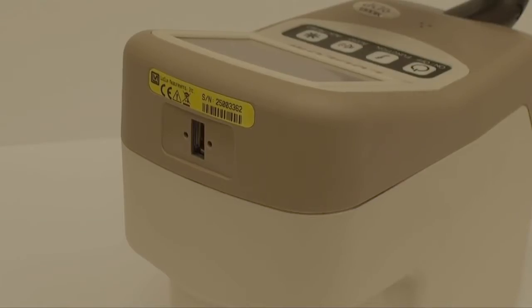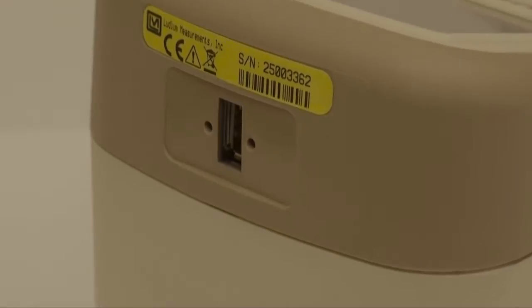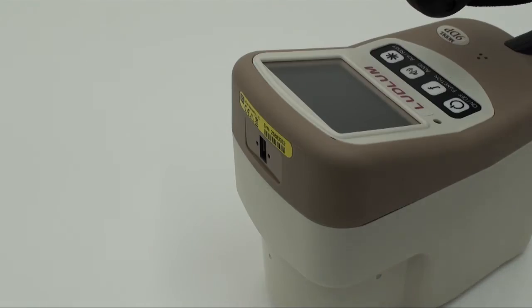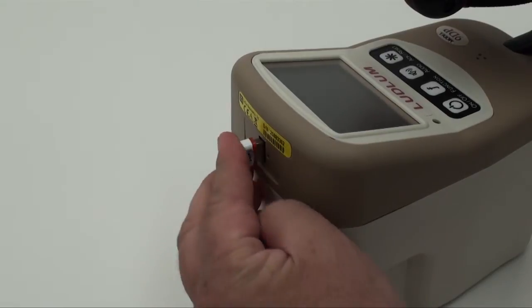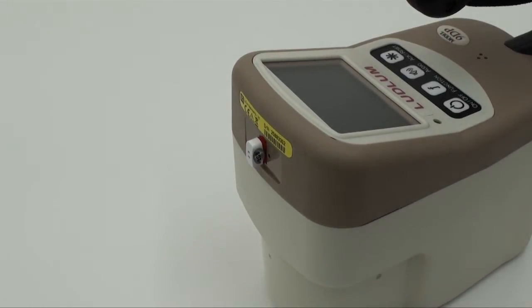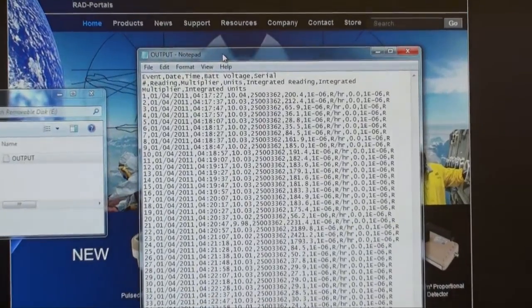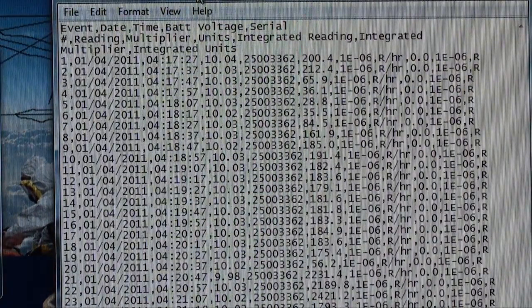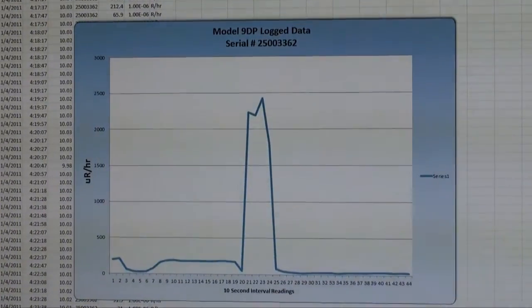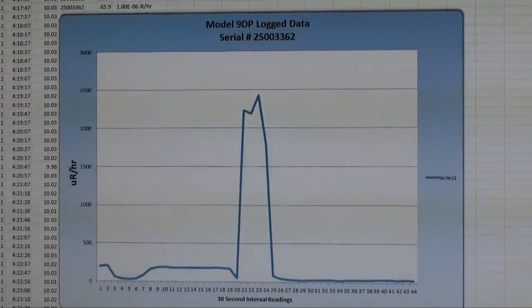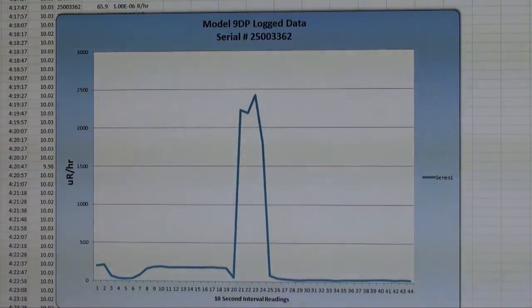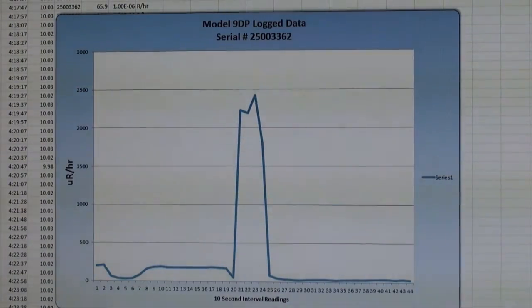A key feature of the model 9DP is a USB port that enables four very valuable benefits in a radiation instrument of this type. The first is data logging, where data is stored to a USB thumb drive inserted into the instrument. Data is written in comma separated value format so it can easily be retrieved by PC spreadsheet and database programs. Logging intervals are programmable with each data point including a real time and date stamp, the radiation rate, the integrated dose, and the instrument status.